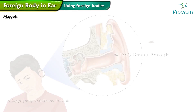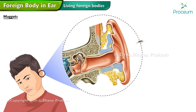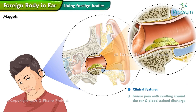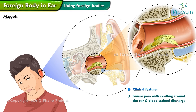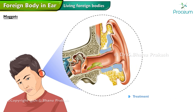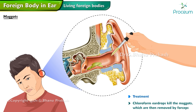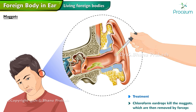Maggots: flies are attracted to the foul-smelling ear discharge from an infected ear and lay their eggs, which hatch out into larvae (maggots). Clinical features of living foreign body in the ear include severe pain, swelling around the ear, blood-stained discharge, and perforation of the tympanic membrane. Treatment: chloroform ear drops kill the maggots, which are then removed by forceps.